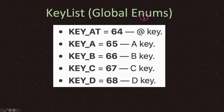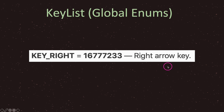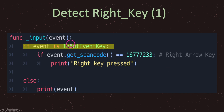Moving on — let's say for our game we just want to move right when the player presses the right arrow key. The integer value for KEY_RIGHT is 16777233, and the API even labels it as 'right arrow key.' Let's go ahead and create our function. For key presses it would be unhandled_input, but for this basic example it doesn't matter much. I wanted to show you how we handle key presses inside the input virtual method.